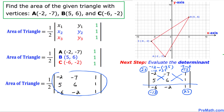Now let's focus on the very first column: negative 2 and 5. Let's copy and paste negative 2, 5 up here and crisscross. 1 times 5 is 5, minus negative 2 times 1 which is negative 2. So that gives us 5 plus 2 equals 7. The 7 goes in the middle.